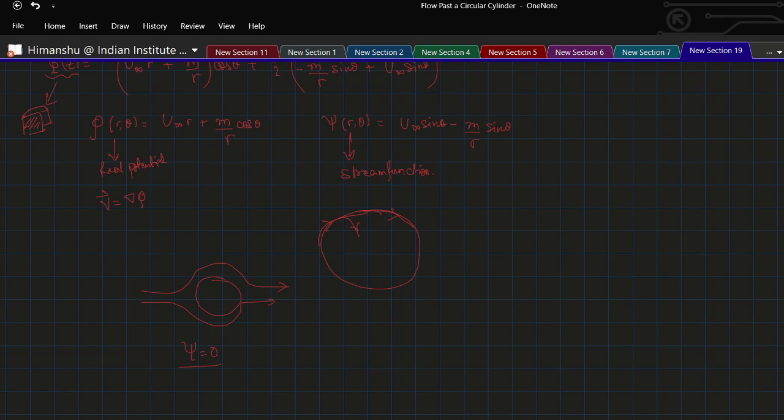Since the contour of the body must lie on a streamline so that the fluid does not pierce into the body, as that would not be possible, by my convention the stream function is taken as 0 for the contour. We would get u infinity sin theta minus m by r sin theta equals to 0.